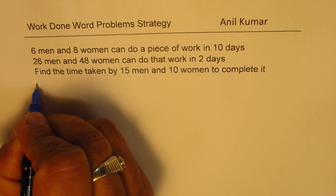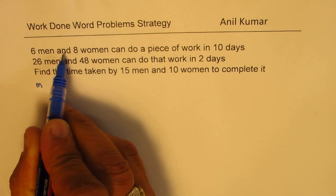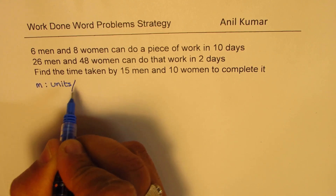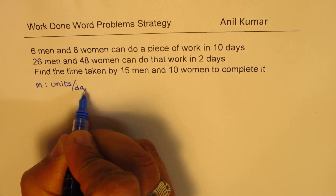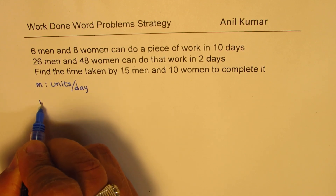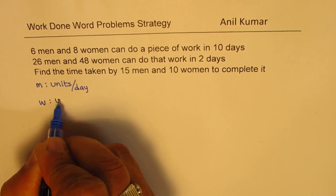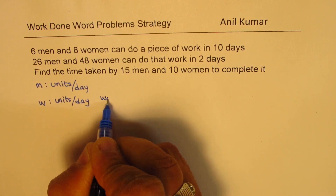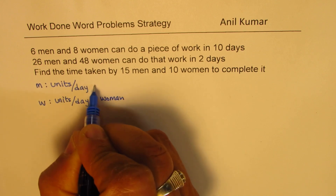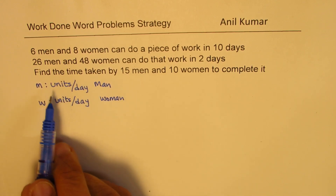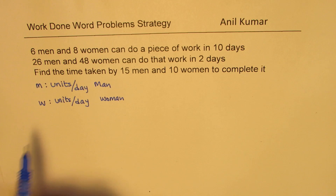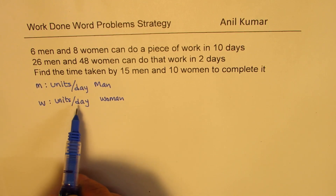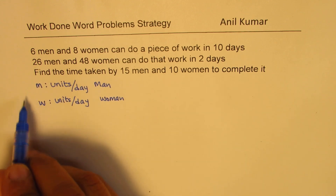Let M be the rate at which men do the work — so M is units per day for men. And W is the number of units per day for women. Each person's rate: capital M for each man, units per day, and for each woman, units per day will be their rate of work. So we define their rate of work.